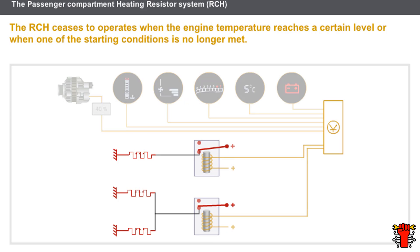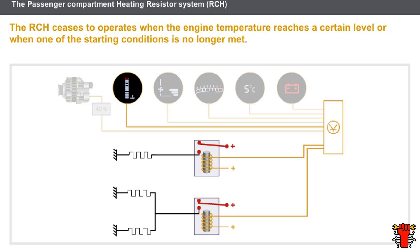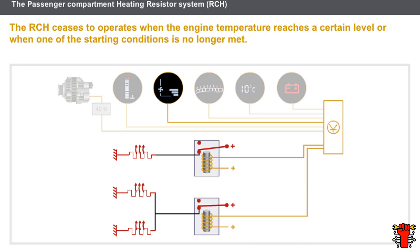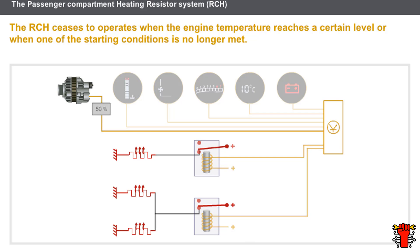Let us now look at the conditions for stopping the RCH. When the engine temperature has reached a certain level, the engine temperature sensor transmits a signal to the air conditioning computer, which then decides to cut off the RCH supply. If the exterior temperature reaches a certain level, the exterior air temperature sensor transmits a signal to the air conditioning computer, which then decides to cut off the supply from the RCH. If the passenger compartment air speed becomes zero, the exterior air temperature sensor transmits a signal to the air conditioning computer, which then decides to cut off the supply from the RCH. When the alternator supply is too high, it transmits a cyclic ratio type signal to the air conditioning computer; control of the RCH is then prohibited, as the battery would discharge.